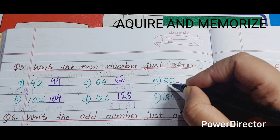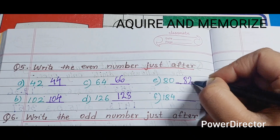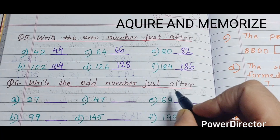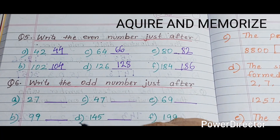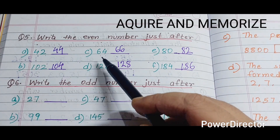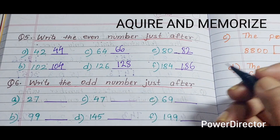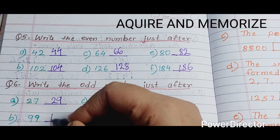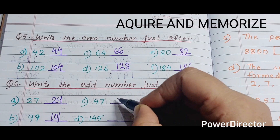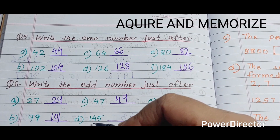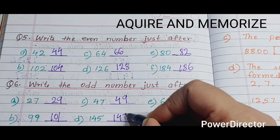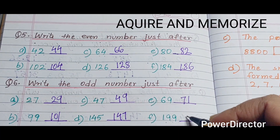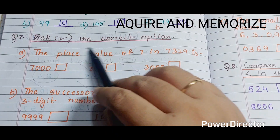Now write the odd number just after the given number, the same way as we did for even numbers. So: just after 27 is 29, just after 99 is 101, just after 47 is 49, just after 145 is 147, just after 69 is 71, and just after 199 is 201.